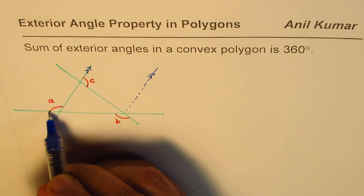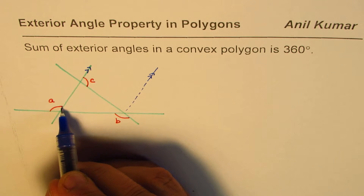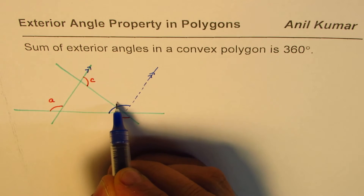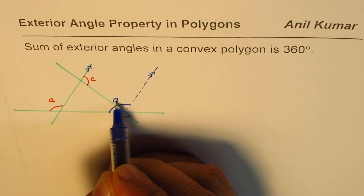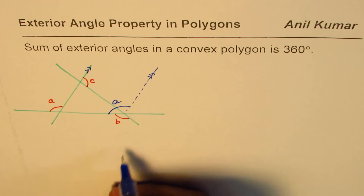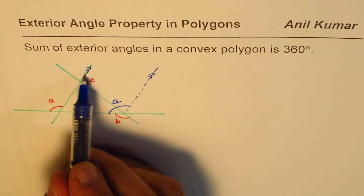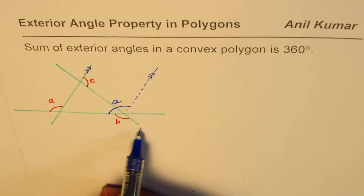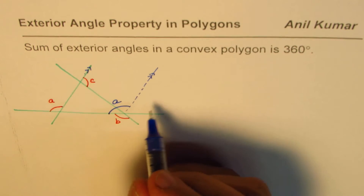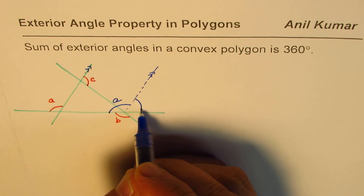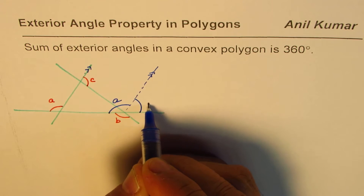Since these two lines are parallel and this is a transversal, angle A should be equal to this corresponding angle — so this big angle becomes A. Similarly, that line becomes a transversal, so angle C is equal to this side — and this is C.